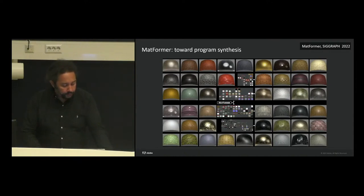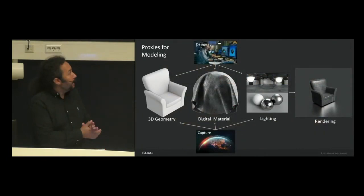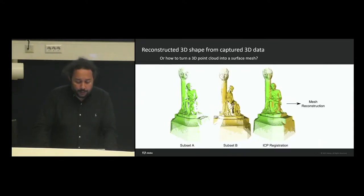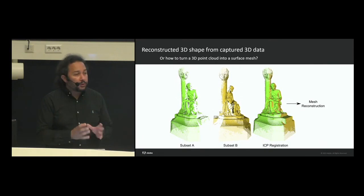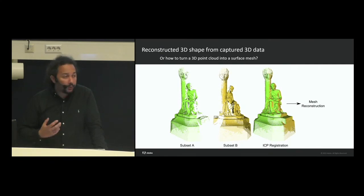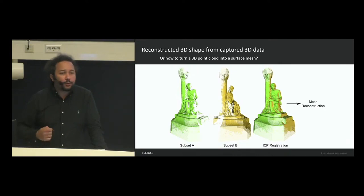Let me now switch to geometry and shapes. In the content creation pipeline when working with captured data, it starts by assembling point clouds. Once registered, these lead to a reconstruction algorithm generating a surface, followed by traditional tasks: UV mapping, subdividing, remeshing, animating, skinning. The key initial step is going from captured measurement data to a surface model.